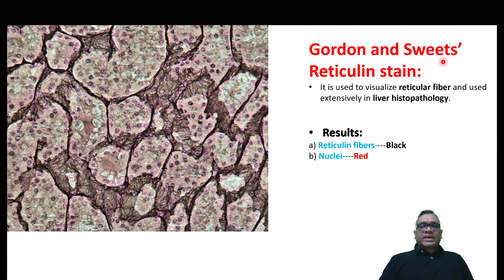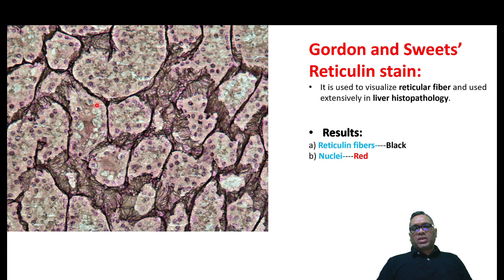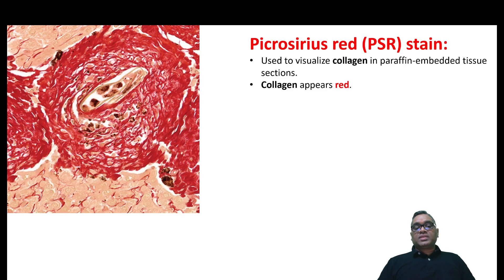There is another important stain, Gordon and Sweet's reticulin stain, which came in AIIMS 2017. Remember it is for reticulin fibers. Reticular fibers are detected by Gordon and Sweet's stain and it is basically used to identify liver pathology. The reticulin fibers appear black in color, and nuclei will be red. You can see black reticulin fibers surrounding the hepatocyte cells in this liver histopathology specimen.